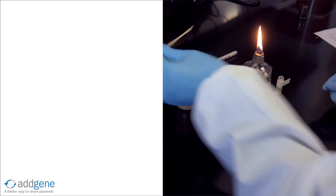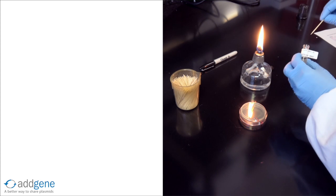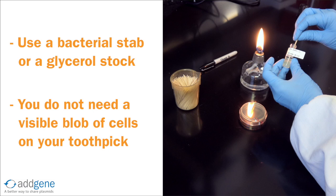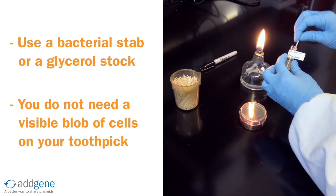Now, we take a sterile toothpick and insert it into the stab culture, dabbing at regions with bacterial growth. This could also be done with a glycerol stock by immersing a sterile toothpick into the semi-frozen solution. Remember that you don't need a giant blob of cells. A toothpick that looks clean is likely sufficiently covered in bacteria.